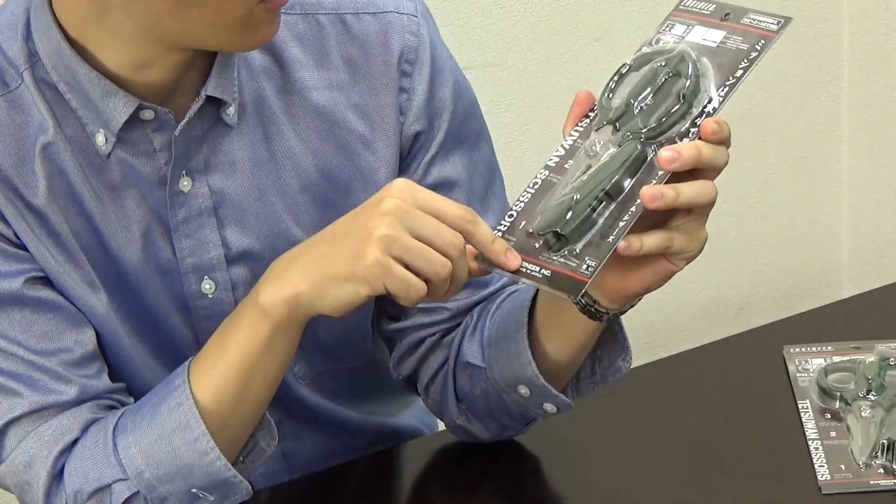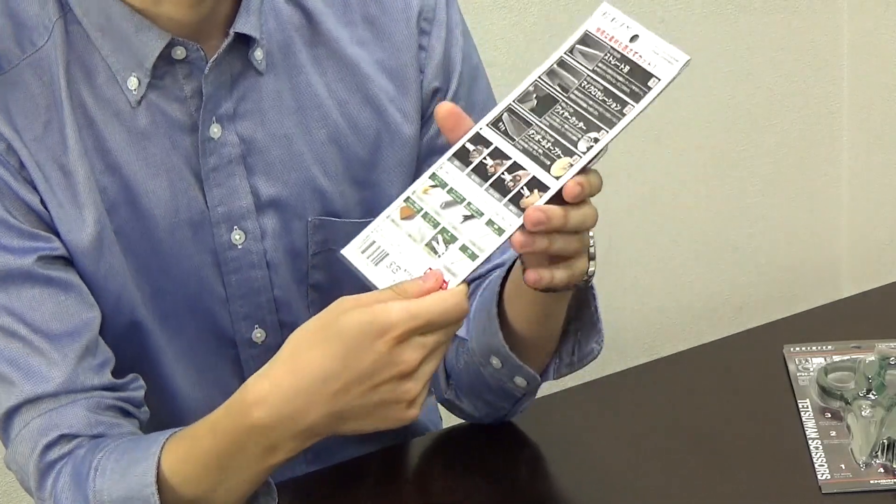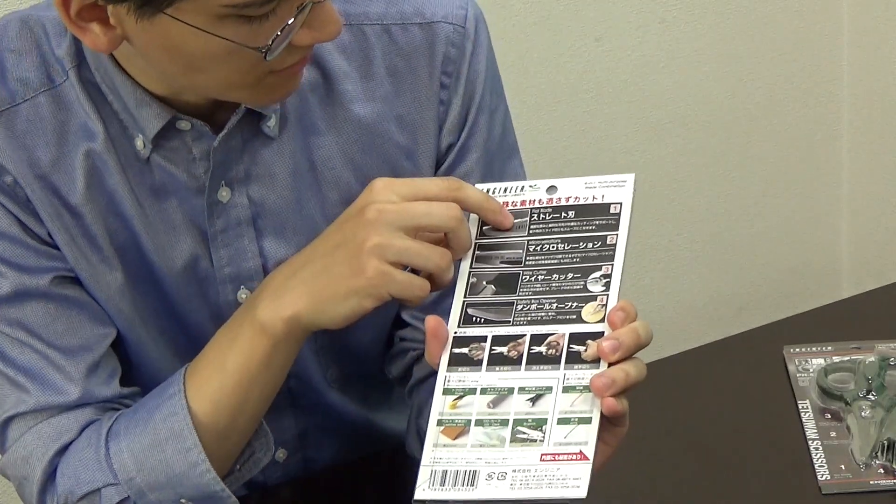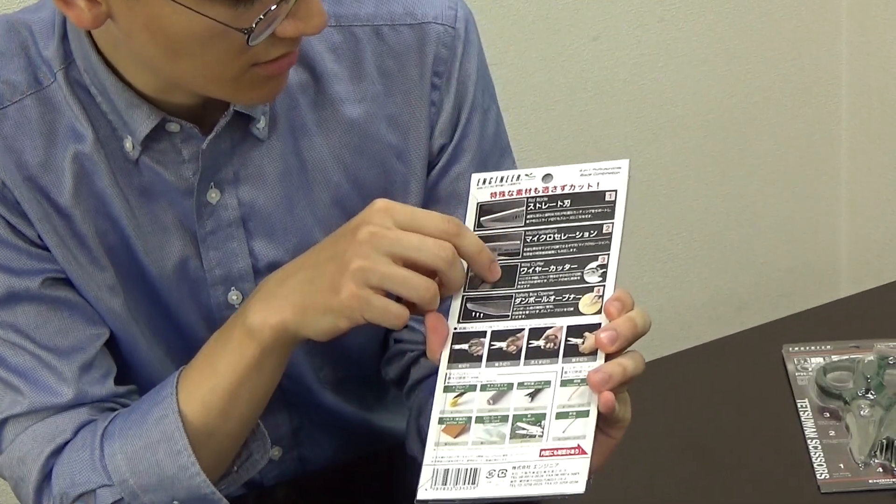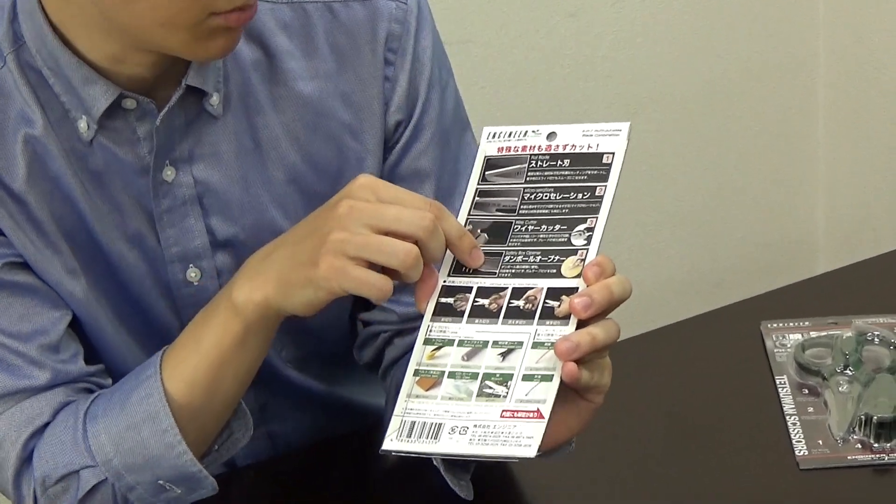One, two, three and four. Let's look on the rear. It says flat blade, micro serrations, wire cutter, safety box opener.